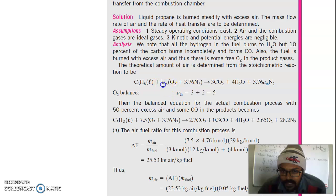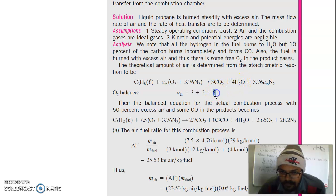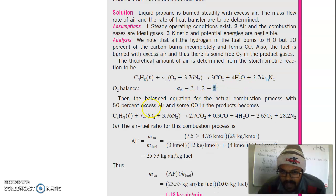The stoichiometric coefficient a_th equals 3 plus 2 — because there are 3 oxygen molecules from carbon and 2 from hydrogen — which gives a_th = 5. So the balanced equation for the actual combustion process with 50% excess air and some carbon monoxide in the products is now constructed.